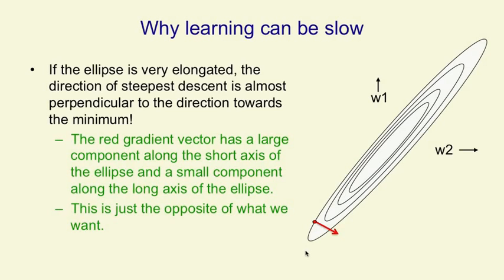If you look at the red arrow in the picture, the gradient is big in the direction in which we don't want to move very far, and it's small in the direction in which we want to move a long way.